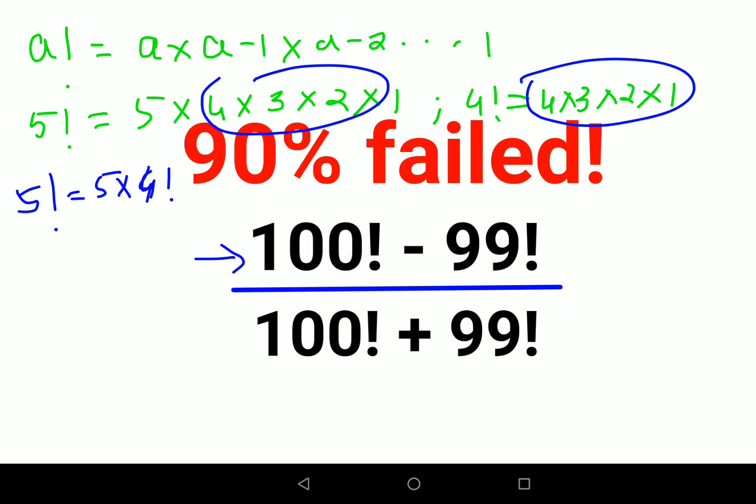So basically, if you want to find the factorial of any number, you can write it as a × (a-1) factorial. So here also, instead of 100, you can write 100 factorial as 100 × 99 factorial. So the problem becomes (100 × 99! - 99!) / (100 × 99! + 99!).